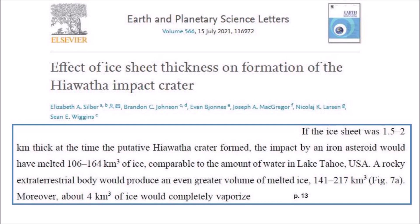Quote, if the ice sheet was 1.5 to 2 kilometers thick at the time of the putative Hiawatha crater formed, the impact by an iron asteroid would have melted 106 to 164 cubic kilometers of ice comparable to the amount of water in Lake Tahoe, USA. A rocky, extra-terrestrial body would produce an even greater volume of melted ice, 141 to 217 cubic kilometers. Moreover, about 4 cubic kilometers of ice would completely vaporize. End quote.